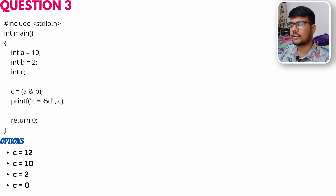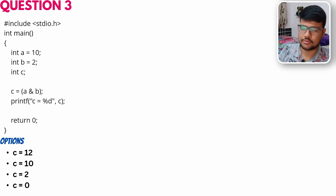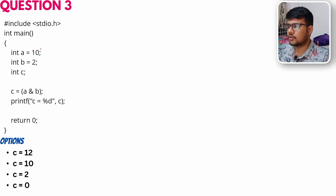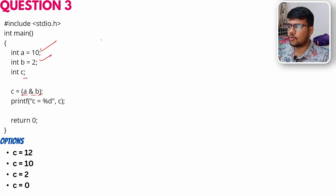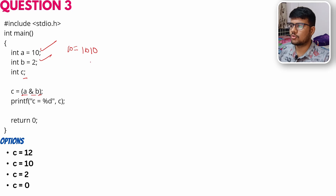Question 3: int a = 10, b = 2, c. We need to perform a AND b. The binary representation of 10 is 1010 (8 + 2), and the binary representation of 2 is 0010.